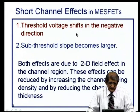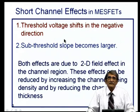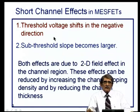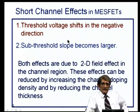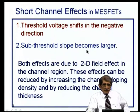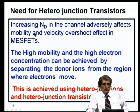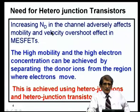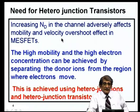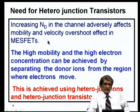Short channel effects in the MOSFET also come into picture. These short channel effects manifest as a threshold voltage shift in the negative direction, and the sub-threshold slope becomes larger. Both effects are due to the 2D field effect on the channel region. These effects can be reduced by increasing the channel doping density accompanied by reducing the channel thickness. However, increasing the channel doping adversely affects mobility and also affects the velocity overshoot effect in the MOSFET, because the initial velocity will be smaller, so the overshoot effect and actual benefits will be reduced.